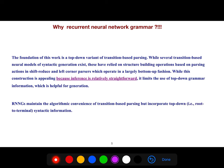And so, why recurrent neural network? So, the foundation of this work is a top-down variant of transition-based parsing. So there are several, as I said, there are several transition-based exist that are using left-corners, shift-reduce, but they're bottom-up fashion. But this approach is good. I mean, bottom-up is good, because inference is relatively straightforward. But it has a problem.